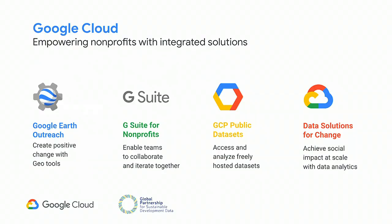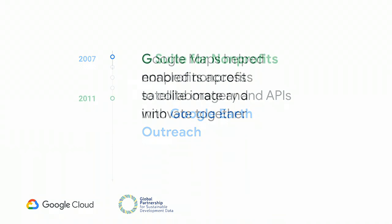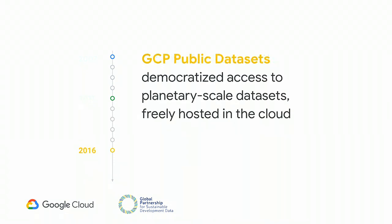Google Cloud is working to empower nonprofits with integrated solutions, from geospatial analysis tools to productivity tools to a nonprofit grant program. In 2007, Google Maps helped nonprofits access satellite imagery and APIs with Google Earth Outreach. In 2011, G Suite for Nonprofits launched with the idea of enabling nonprofits to collaborate and innovate together—both offerings currently available through the Google for Nonprofits website. In 2016, we launched GCP Public Datasets, democratizing access to planetary-scale datasets freely hosted in the cloud, available to any GCP user up to one terabyte per month at no charge.